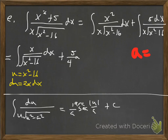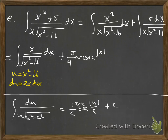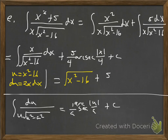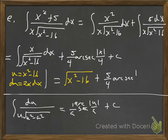For the arc secant piece, a is 4 and u is x, giving 5/4 · arc secant of |x|/4, plus C. The first piece — after u-substitution — becomes the square root of x²−16. So the full answer is √(x²−16) plus (5/4) arc secant of |x| over 4, plus C.